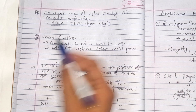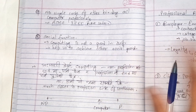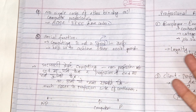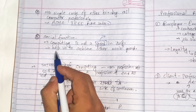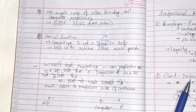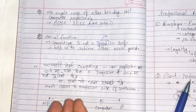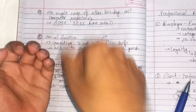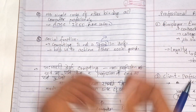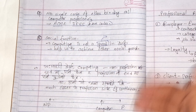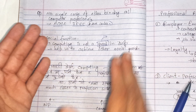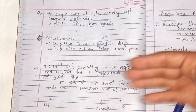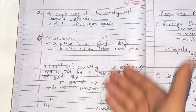Regarding social function: computing is not a good in itself. 'Good' here means not good or bad as a value — computing is not an end in itself. Rather, it helps us achieve other social goods. It is a means to achieve other ends. Just as in business analysis, computing can act as a means to some decision-making; it is not the end in itself.